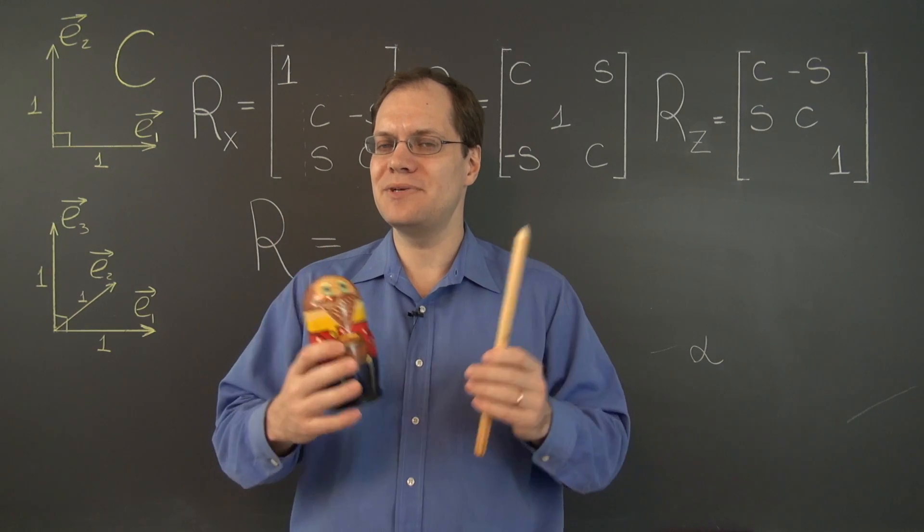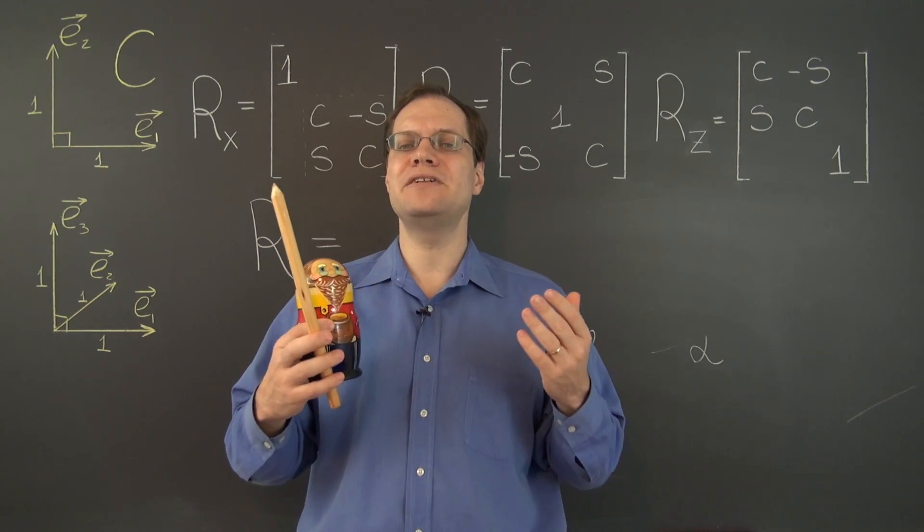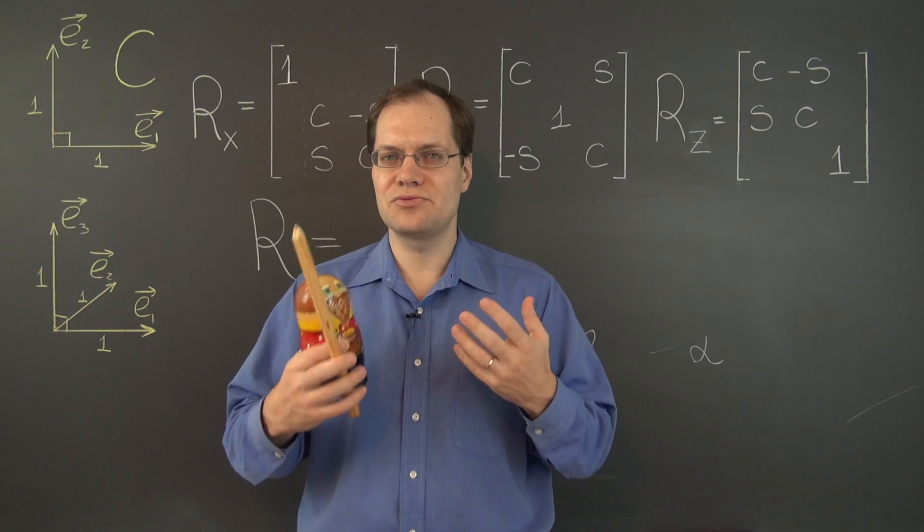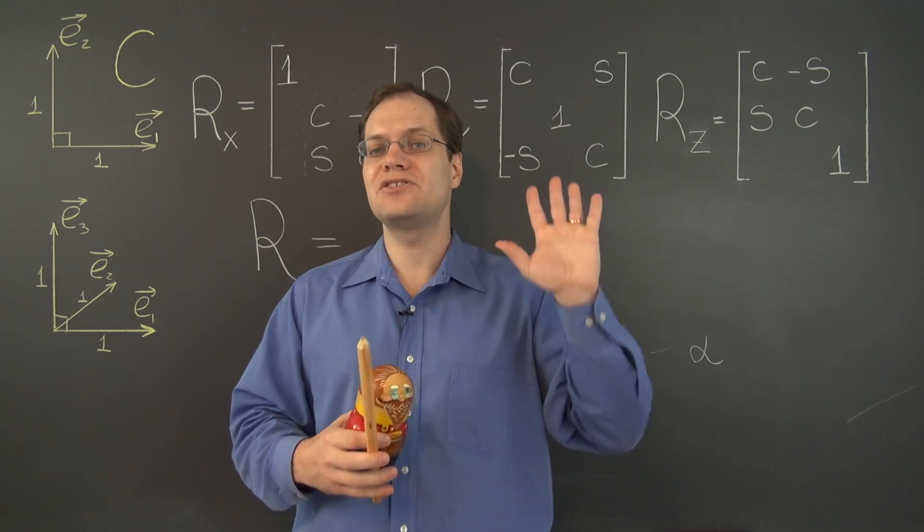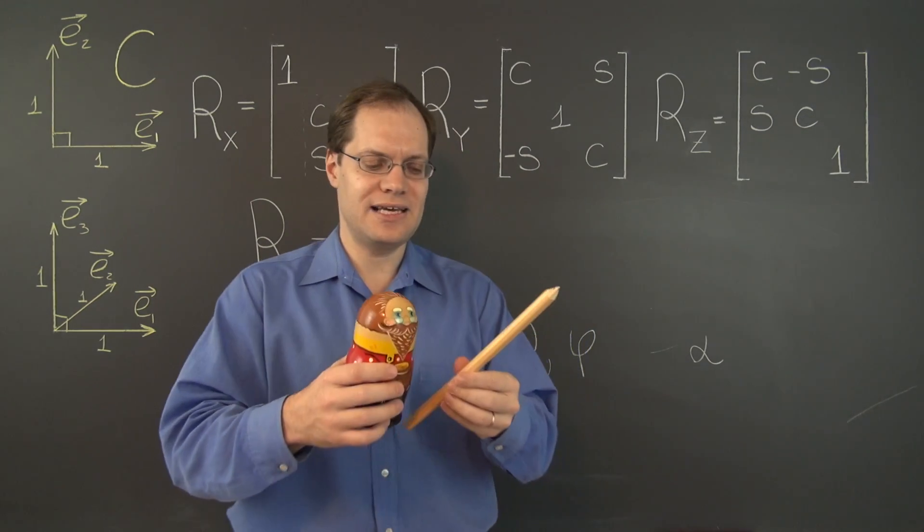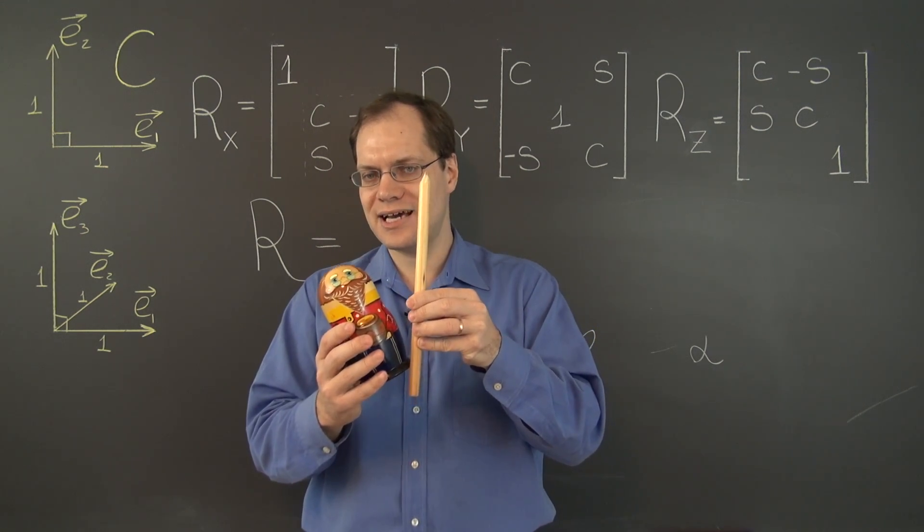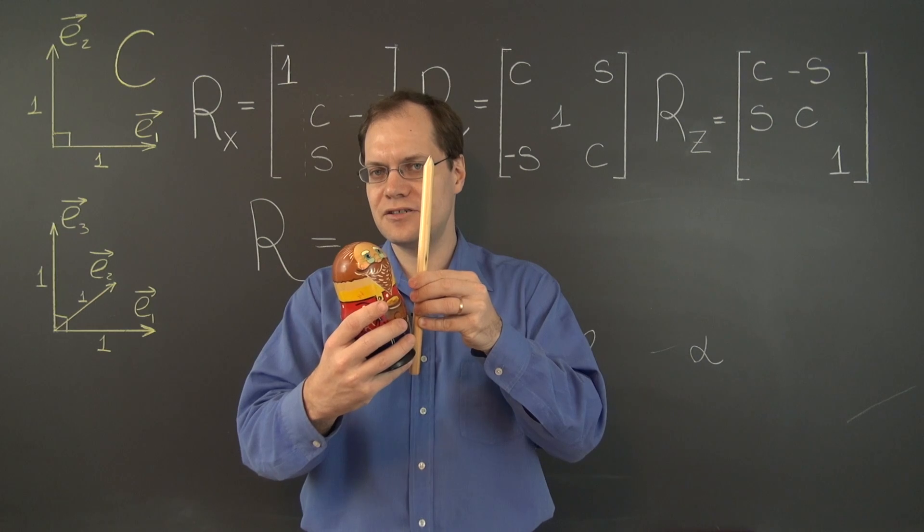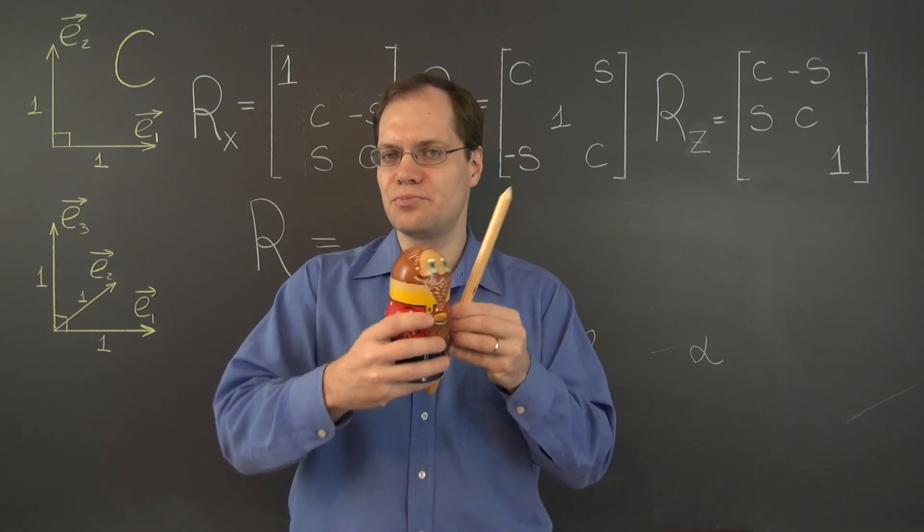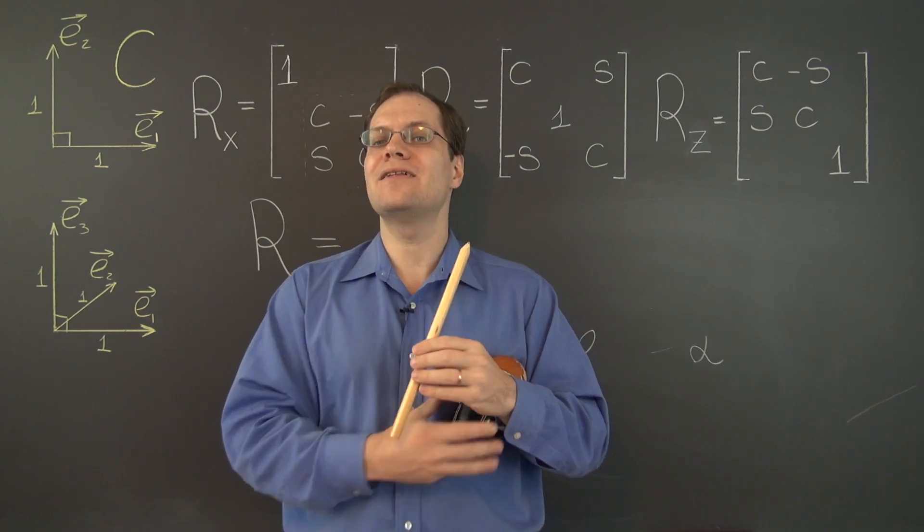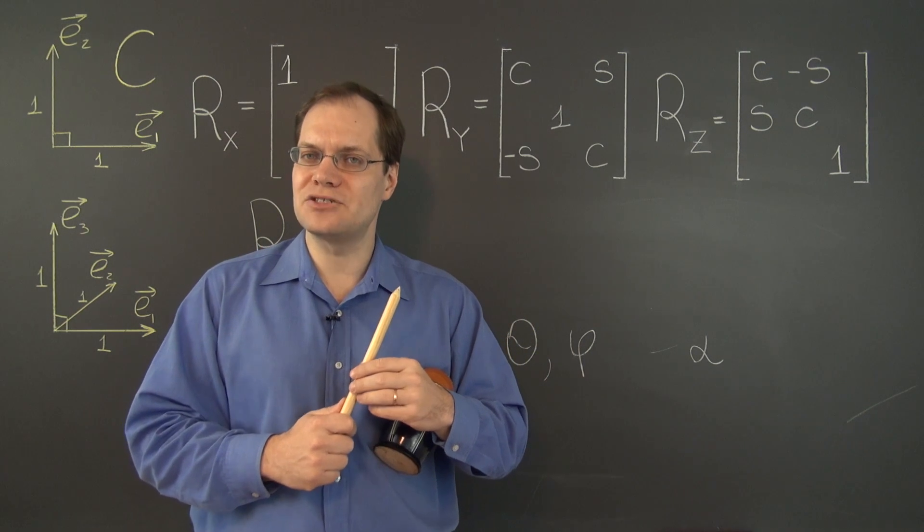Now let's talk about the implementation. How many elementary steps does this recipe entail? And the answer is five because it takes two elementary steps to align the axis with the z-axis. Then comes the rotation. Then two more steps to bring the axis back. Now let's discuss each of the elementary steps.